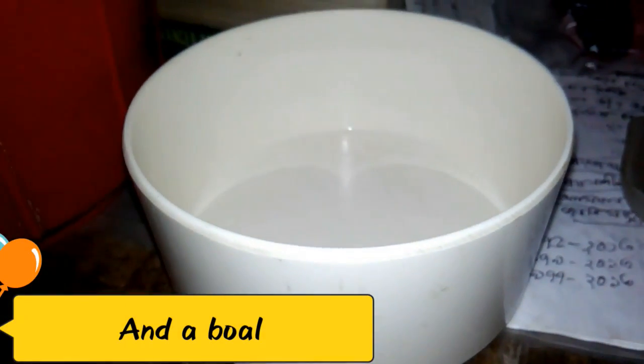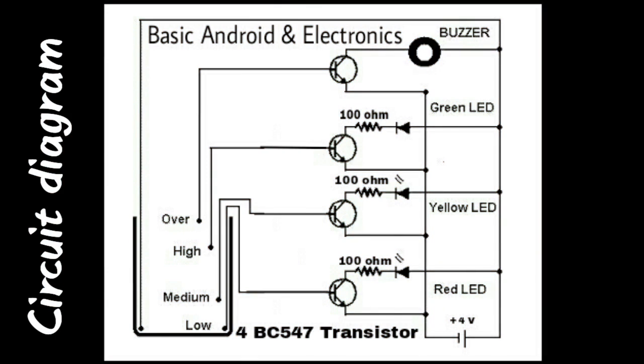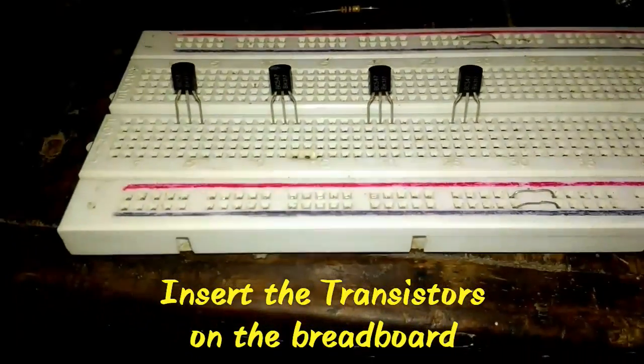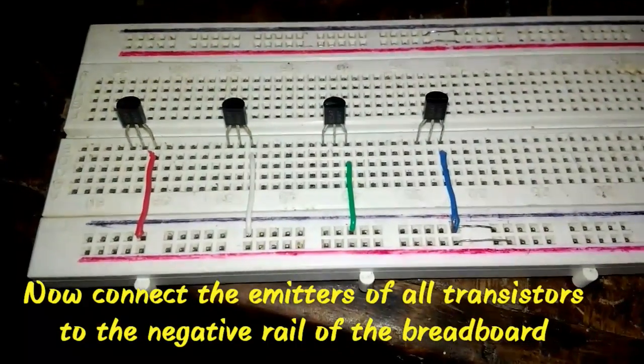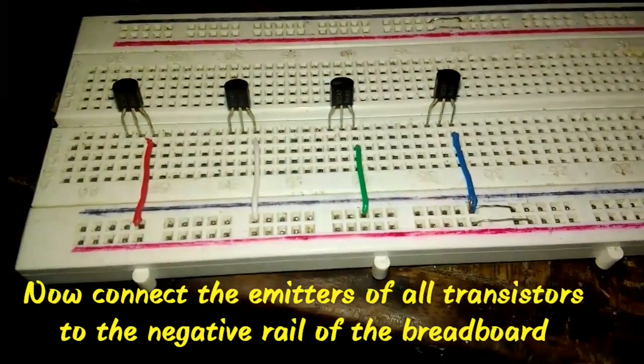This is the circuit diagram. First, insert the transistors on the breadboard. Now connect the emitters of all transistors to the negative rail of the breadboard.